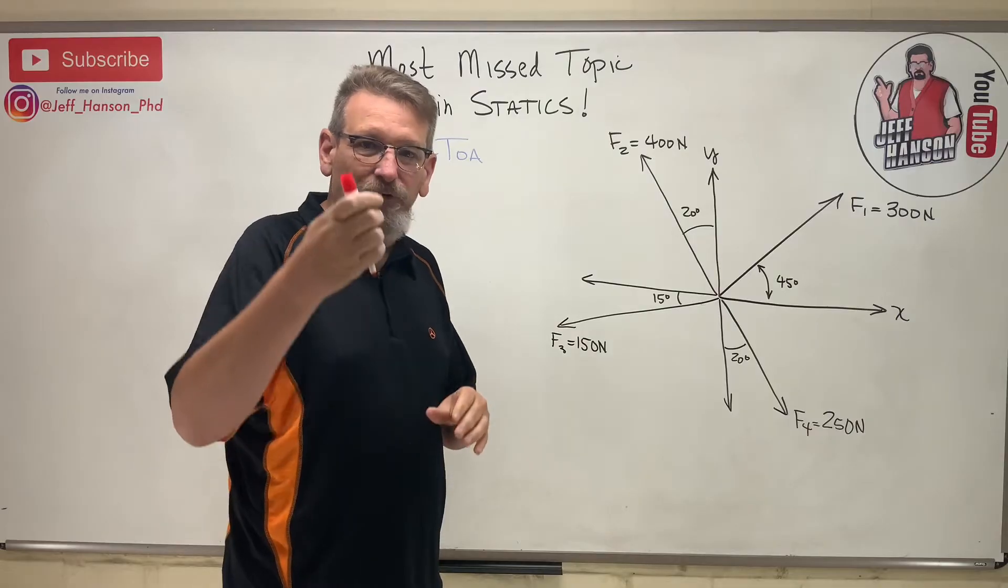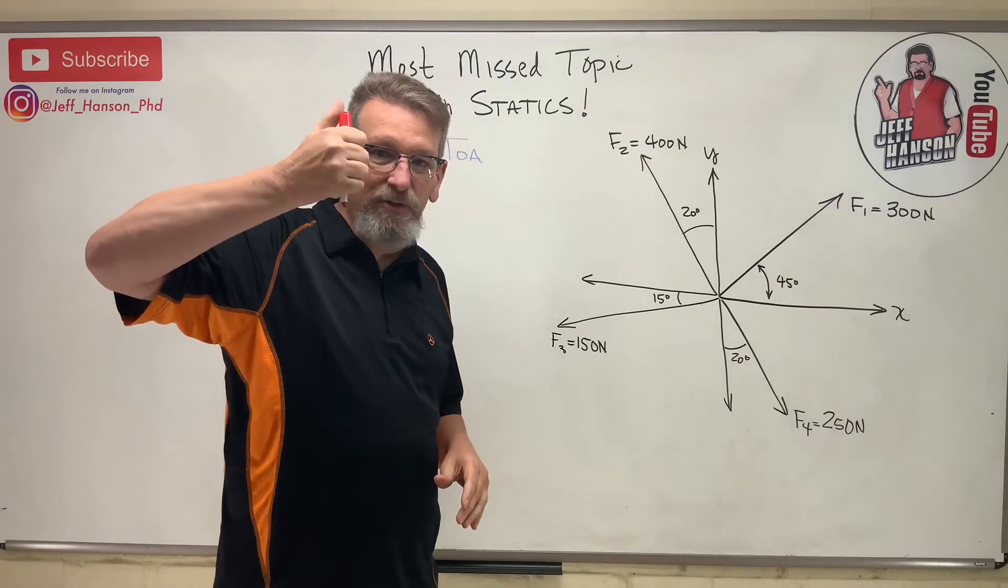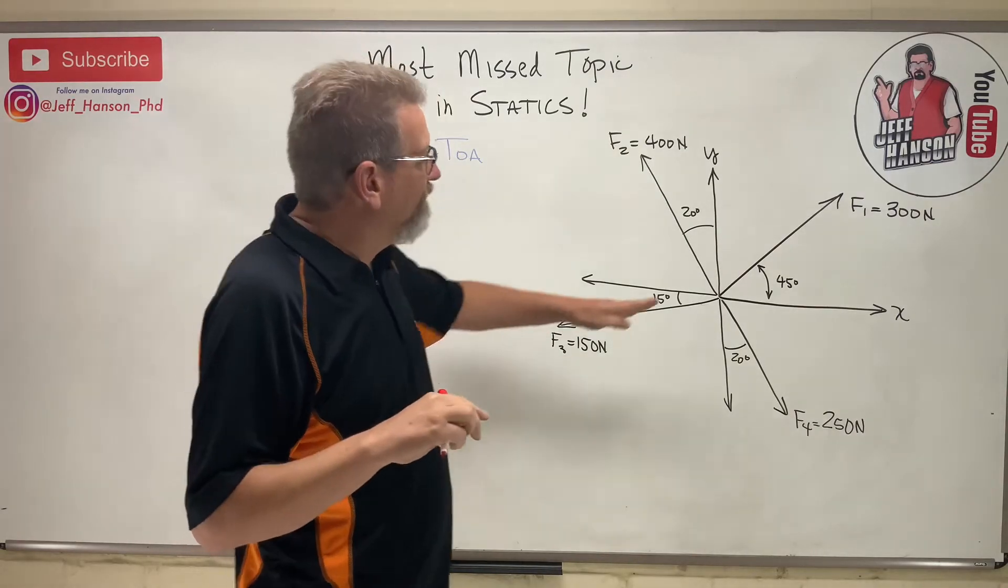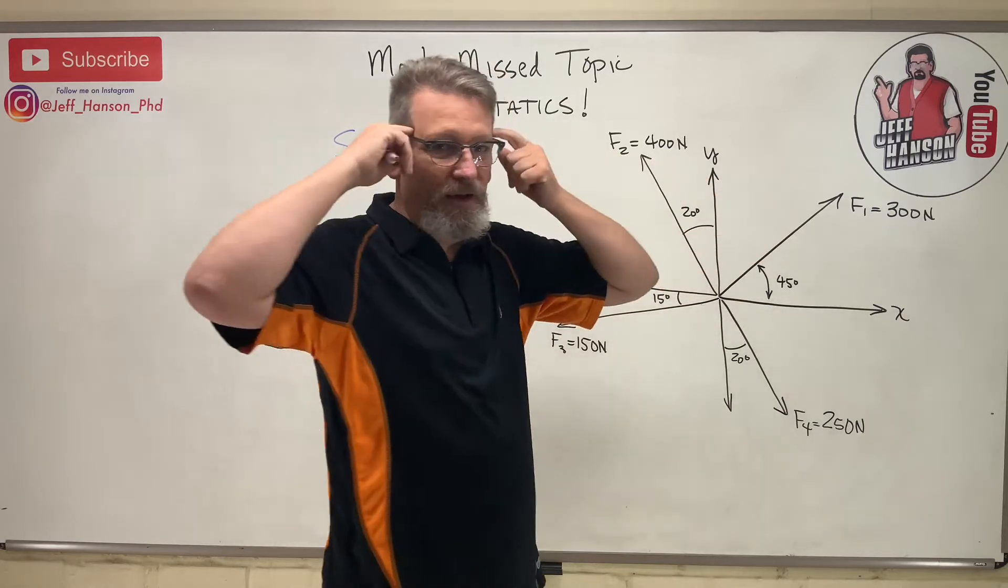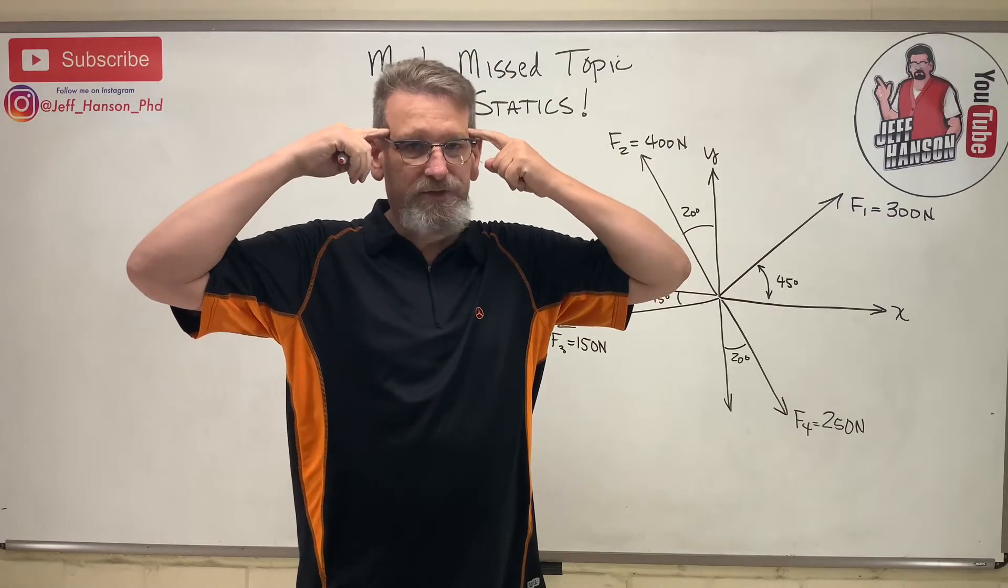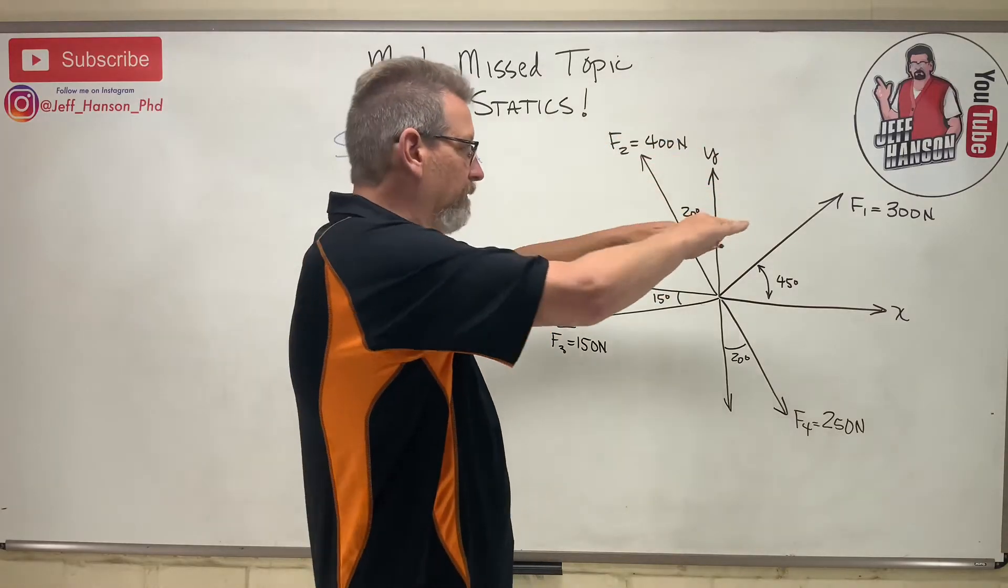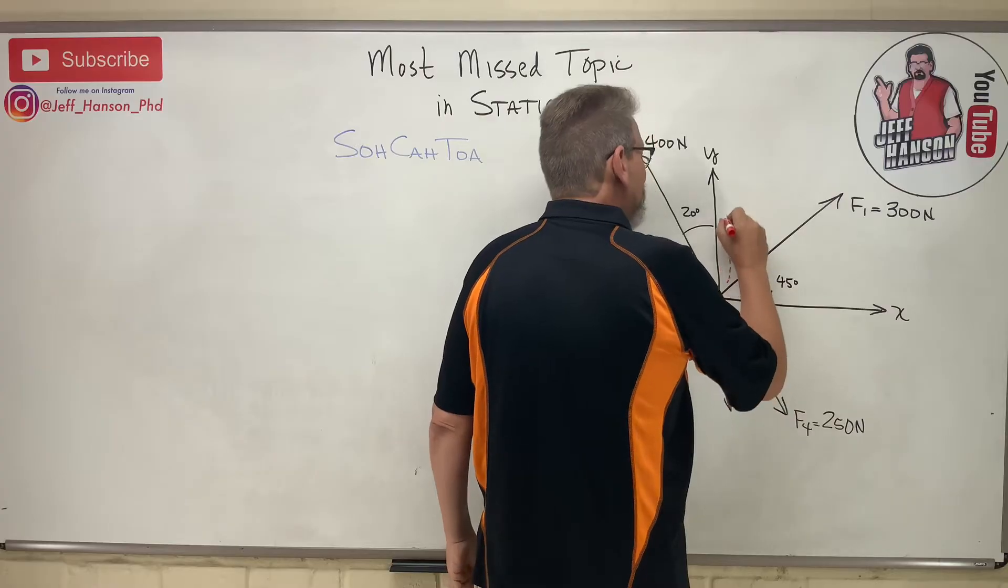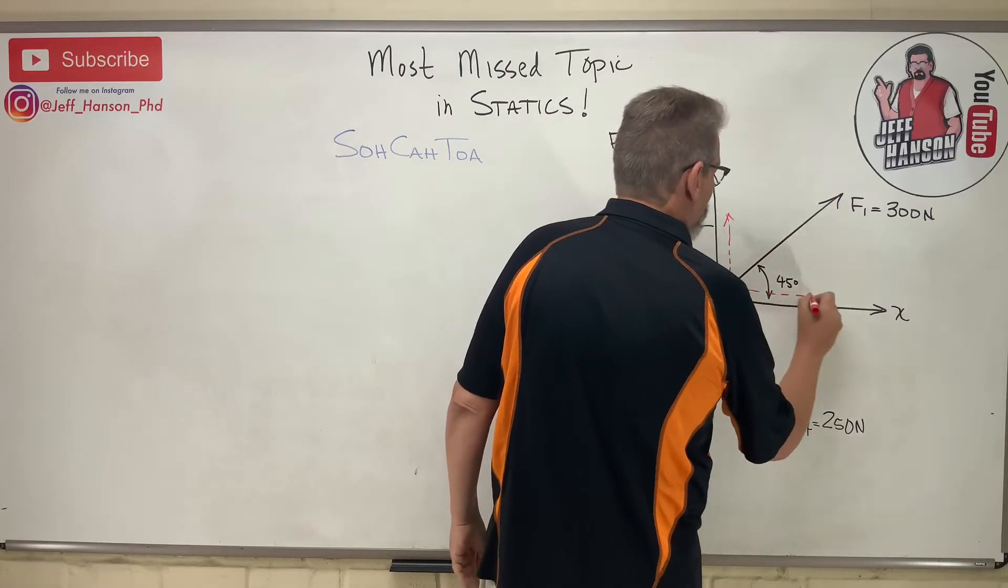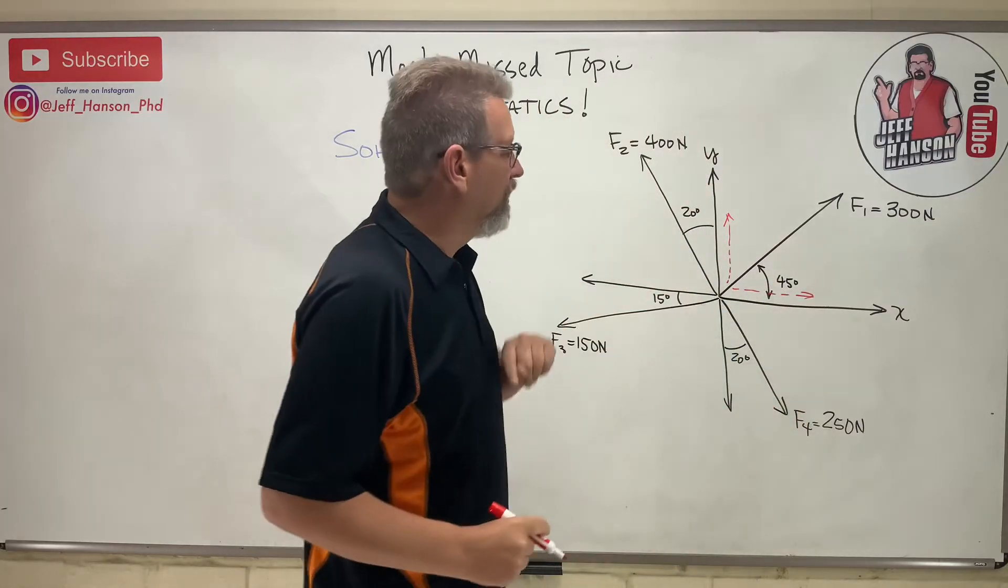Here we go. My recommendation is for you, when you do your test, to have one of those little colored clicky pens, you know, that you can do like green and blue. When you have a vector like this, the first thing you ought to do when you see a vector at an angle is a bell ought to go off in your head: must convert to components.